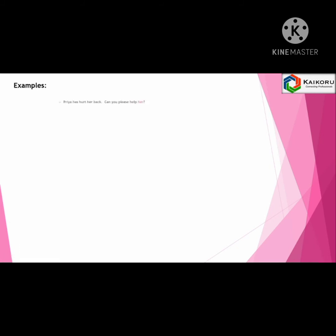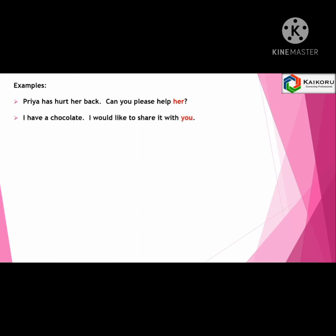Examples. Priya has had her back. Can you please help her? I have a chocolate. I would like to share it with you. He is standing there. Go and talk to him. In these sentences, her, you and him are pronouns. They are used instead of naming words.